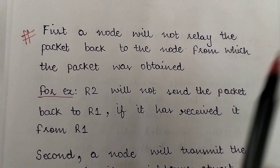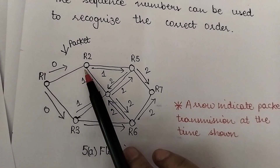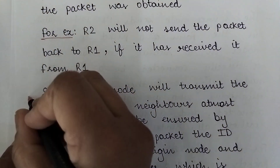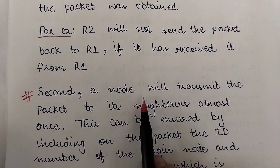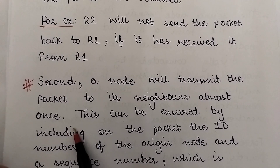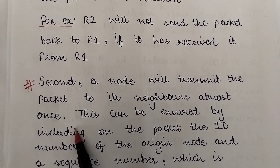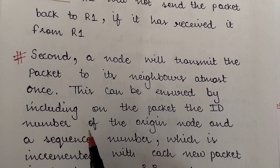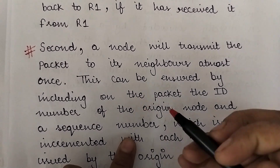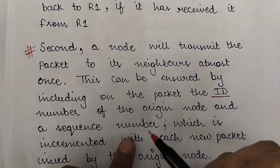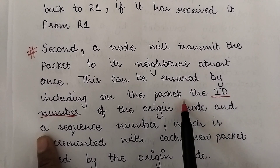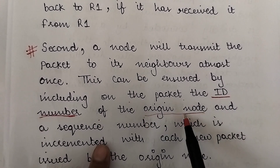The second rule to limit the number of packets is that a node will transmit a packet to its neighbor at most once. To ensure this, an ID is included on the packet — specifically the ID number of the origin node.